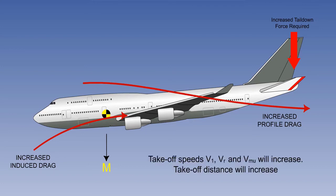Exceeding the forward limit will also affect the speeds used in take-off calculations, notably the decision speed V1, the rotate speed VR, and the minimum unstick speed VMU. This will also result in an increase of take-off distance required.